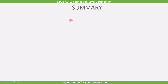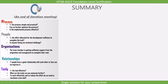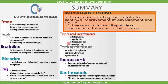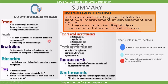To summarize: the retrospective meeting is an end-of-iteration meeting. During the meeting, we can discuss process, people, organizations, relationships, and tools. Retrospective meetings are helpful for continual improvement of development and testing if conducted regularly or with appropriate follow-up. The four improvement discussion points are: test-related improvements, testability-related points, root cause analysis, and other improvements. Finally, we covered the tester's role in retrospectives. With this, the lecture ends.